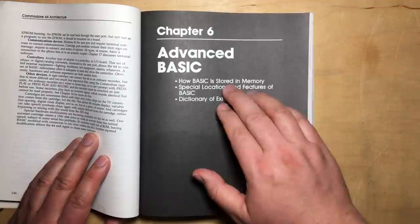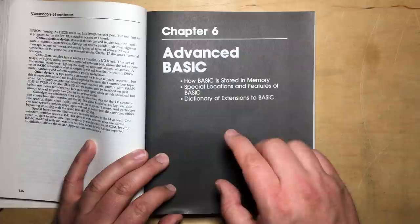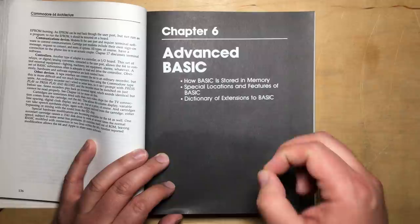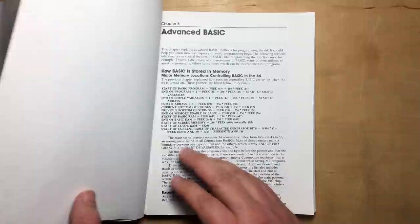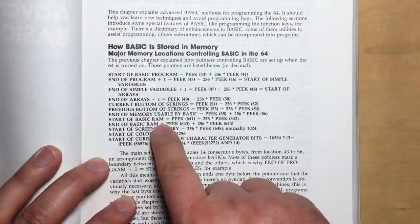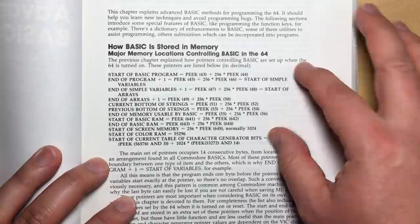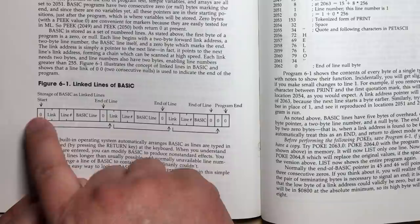Chapter six, advanced basic. How basic is stored in memory, special locations and features, and dictionary of extensions to basic. So much of what I've done with my channel has been this kind of information. I have to admit, I don't always go to this book for the information. The first time I specifically referenced this book for one of my episodes was that recent hex conversion one I did. But really, there's so many ideas here. This is how basic is stored in memory. And here you can see, like, color RAM is always fixed at that location. But where your basic RAM starts, screen memory. And many of these things are configurable. Color RAM is fixed, unfortunately. But everything else can be configured. How basic is linked. I've gotten into this a little bit, but I really want to do a full episode about that.